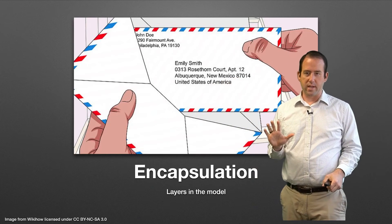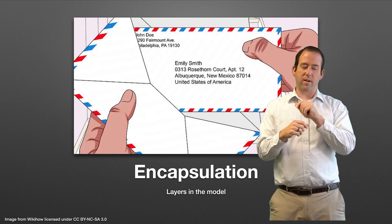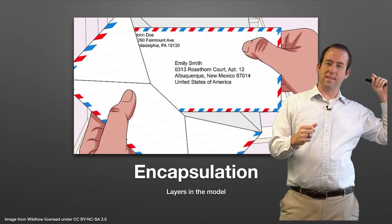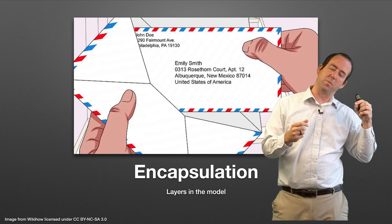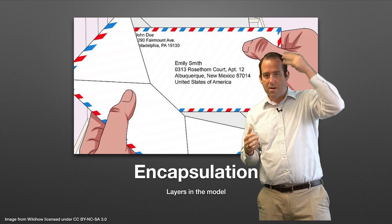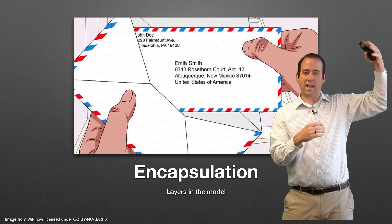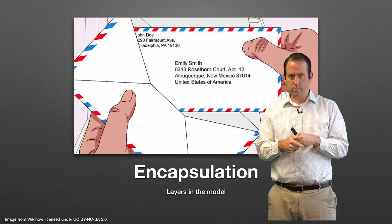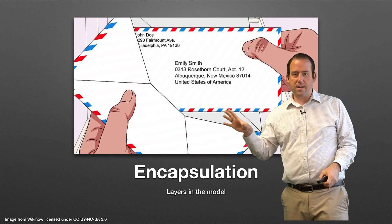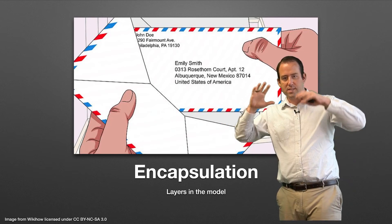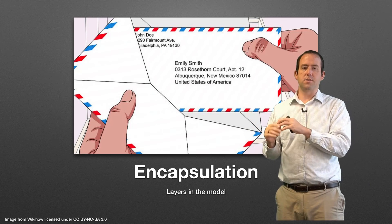This comes down to the concept of encapsulation — essentially putting envelopes inside of more envelopes. At the top, you have the application layer, and that's the data you're writing on a letter. The letter gets put inside an envelope at the transport layer. That envelope gets put inside a network layer envelope, which gets put inside a data link layer envelope, as you move down the stack. Each envelope is opened as you move back up the stack on the receiving end.